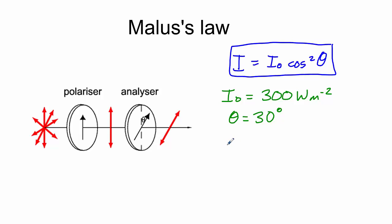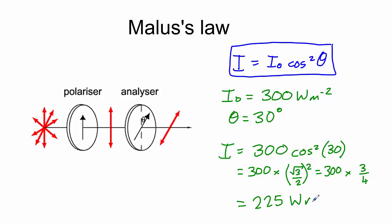Then we can use the equation I equals 300 cos squared 30 degrees. So I equals 300 times, cos of 30 is root 3 over 2, and we need to square that, which will give us 300 times three quarters, which gives us a final answer of 225 watts per square meter.